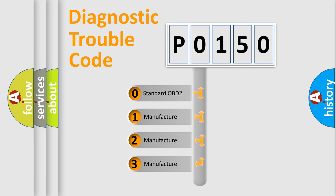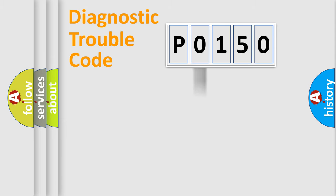If the second character is expressed as zero, it is a standardized error. In the case of numbers 1, 2, or 3, it is a more prestigious expression of the car-specific error.